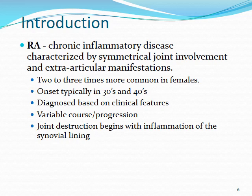Rheumatoid arthritis is a chronic inflammatory disease typically characterized by symmetrical joint involvement, with many extra-articular manifestations in long-standing disease. Females are more predominantly affected, with onset typically in the 30s to 40s. RA is diagnosed mostly based on clinical features and typically follows a variable course, especially when utilizing medications we'll discuss.